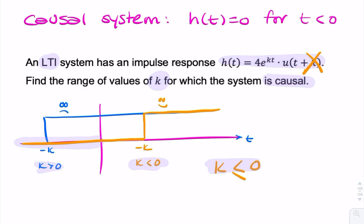So the answer to the question, what's the range of values for which the system is causal? We'll say k is less than zero is the range of values for which this system is causal.